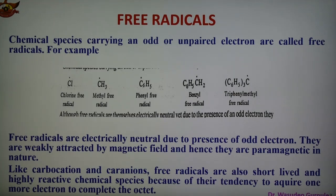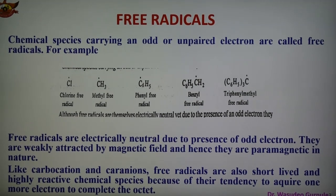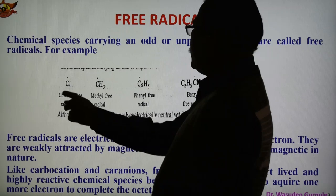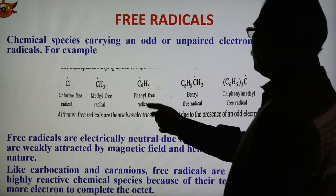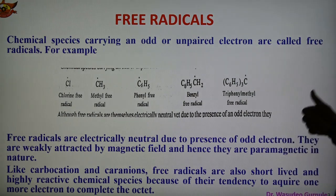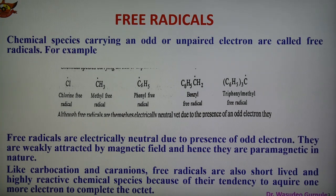Any species which has an odd or unshared electron is known as Free Radical. In contrast to the Carbonium or Carbanion ion, these have no charge. They are formed by homolytic bond fission. Examples include: Chlorine Free Radical, Methyl Free Radical, Phenyl Free Radical — where an odd electron is present — Benzyl Free Radical, and Triphenyl Methyl Free Radical. So these are the examples of Free Radicals.